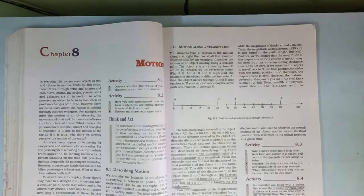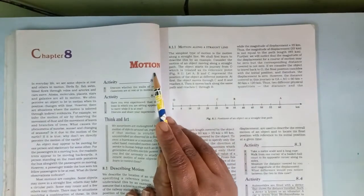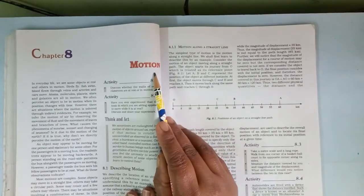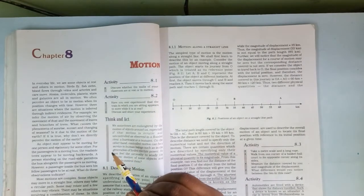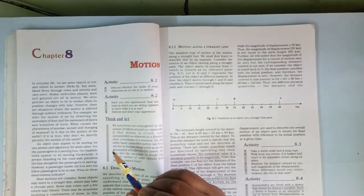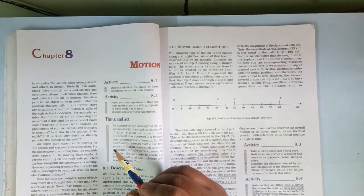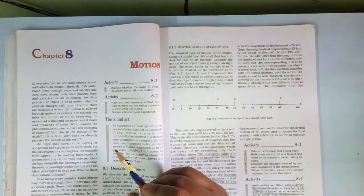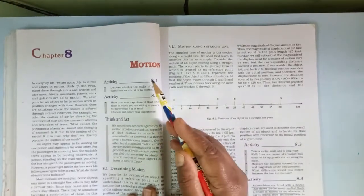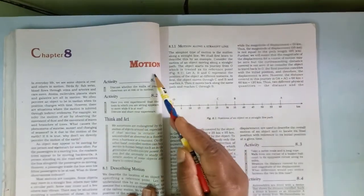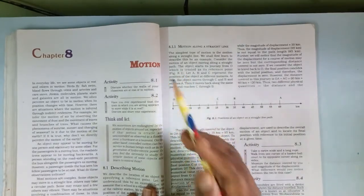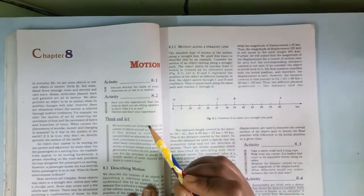This is 9th standard science class and now in this session we will be starting with a new chapter, that is motion. We have completed with the previous lesson that is matter in our surrounding. I request all of you to go through all the videos to understand the whole chapter in detail. Now motion is a chapter which is actually from a physics branch.